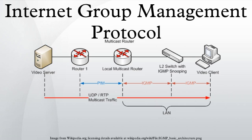Architecture: A network designed to deliver a multicast service using IGMP might use this basic architecture. IGMP operates between the client computer and a local multicast router. Switches featuring IGMP snooping derive useful information by observing these IGMP transactions. Protocol Independent Multicast is then used between the local and remote multicast routers to direct multicast traffic from the multicast server to many multicast clients.